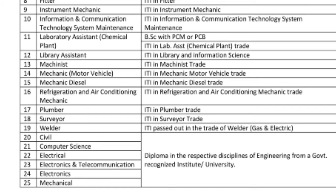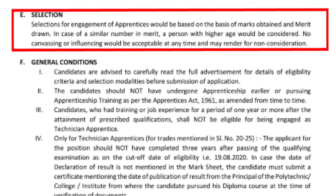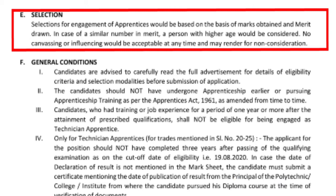This covers the main eligibility and qualification criteria. Next is the Duration of Training — the training period needs to be checked by discipline, including library assistance. Area assistance requires 6 years. Selection is based on a merit list using basic academic marks, and the most percentage will be considered.